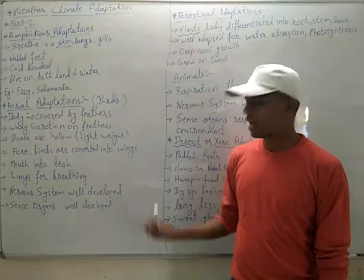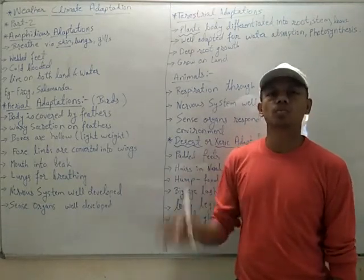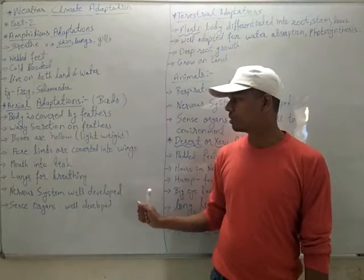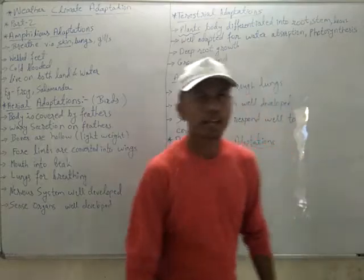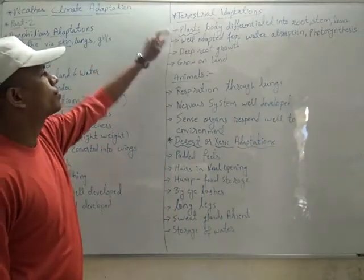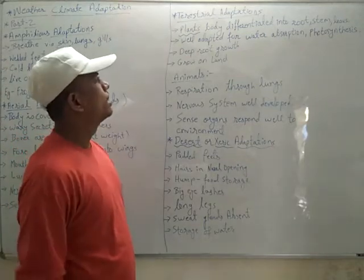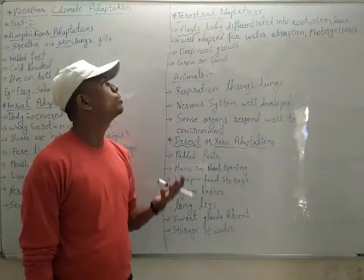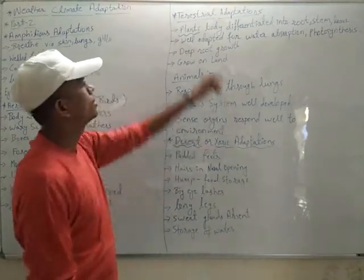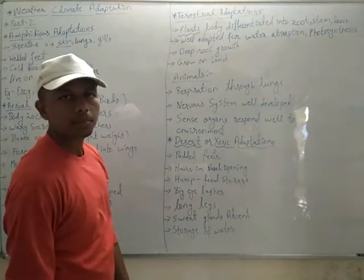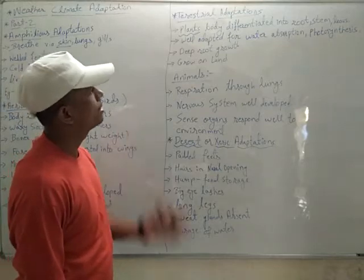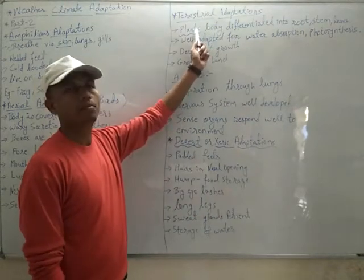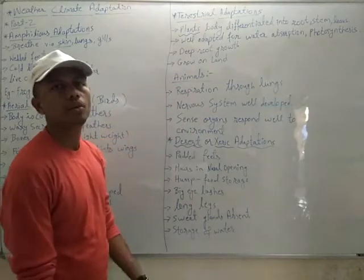The nervous system and sense organs also help to survive day-to-day life, find food and water, and protect from predators — so both are very important. The next adaptation we are going to study is terrestrial adaptation. Organisms adapted to live on land are called terrestrial organisms. There are many types of terrestrial adaptations, but mainly we will look at plants and animals — terrestrial plants that grow on land and terrestrial animals that live on land.